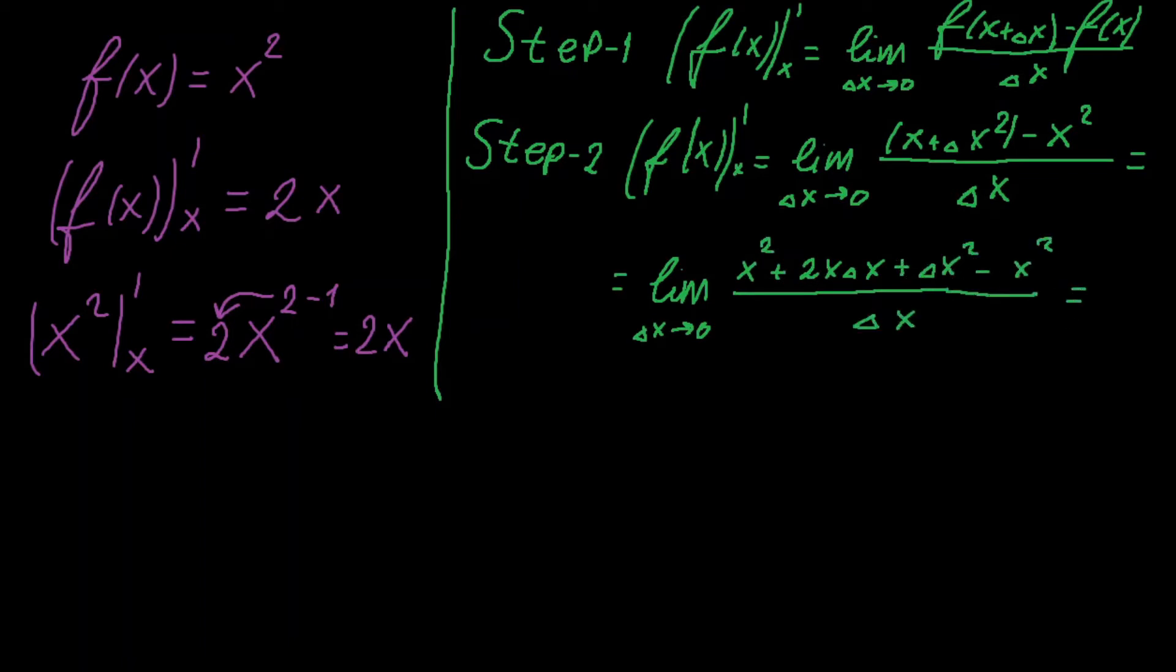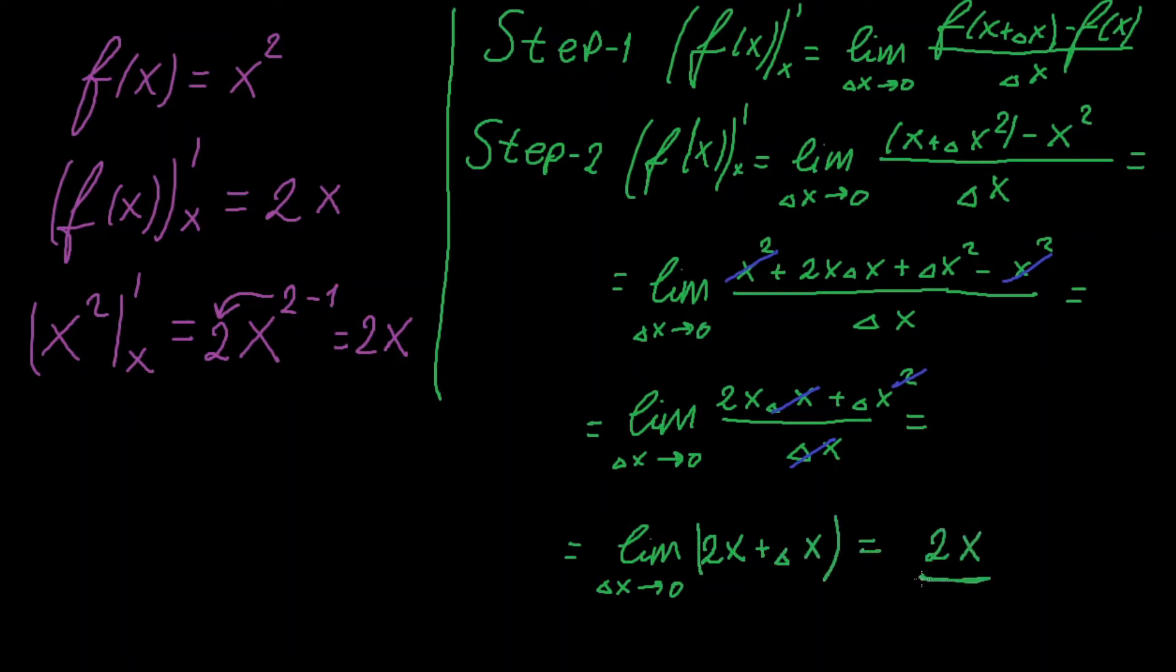Alright, carefully eliminate everything you can and start to evaluate the limit. We can see the same 2x expression as we have obtained it before using the school rule.